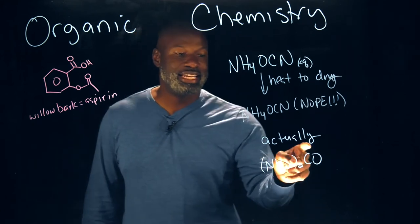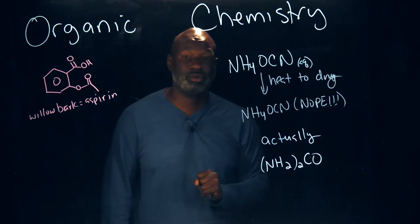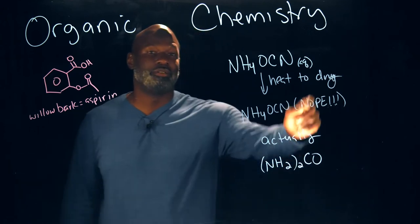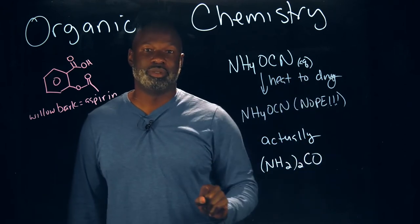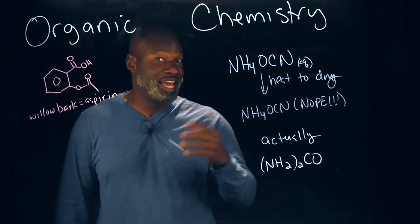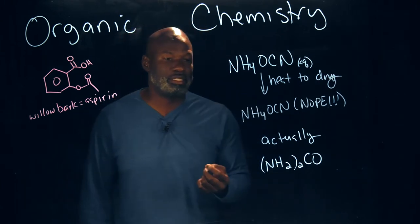But instead, he got this compound, and that compound is urea, which is an organic compound. So from an inorganic species came an organic species, which suggests that you can make an organic compound without it coming from an organic species.